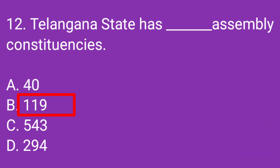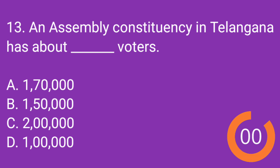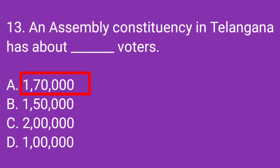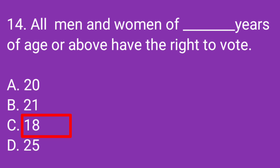Correct answer: 119. Question number 13: An assembly constituency in Telangana has about dash voters. Correct answer: 170,000 voters. Question number 14: All men and women of dash years of age or above have the right to vote. Correct answer: 18.